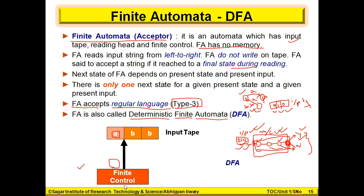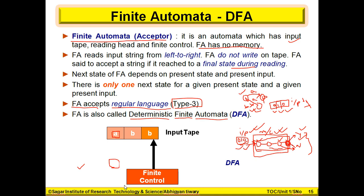At last, it reads B again and after taking it as input, it reaches its final state. So in a state, for a single kind of input, we have a single kind of output state. That's all.